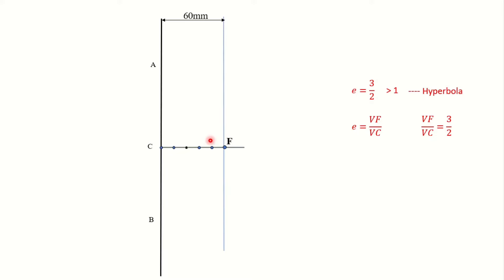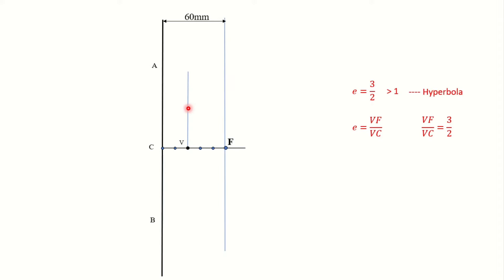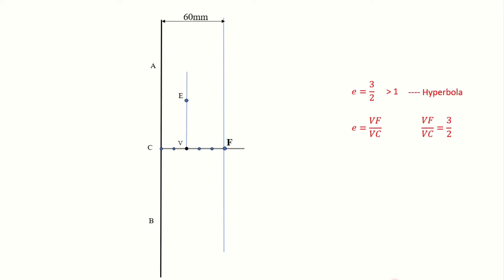So 3 divisions from point F — 1, 2, and 3 — here we get point V. Once you get point V, draw a straight vertical line at point V itself. Now take the distance VF in the compass and cut an arc from point V on this vertical line, so that you get point E. In this case, VF is equal to VE. Once you get point E, draw a straight line joining point C and E and extend that line to the right-hand side.